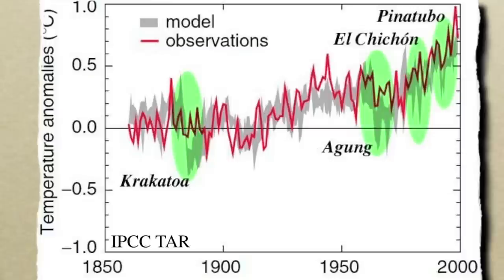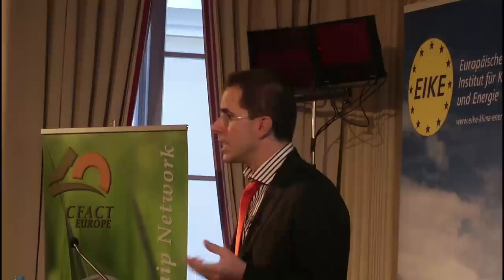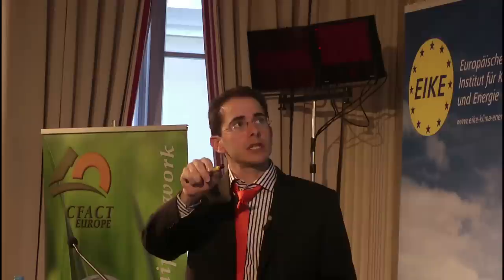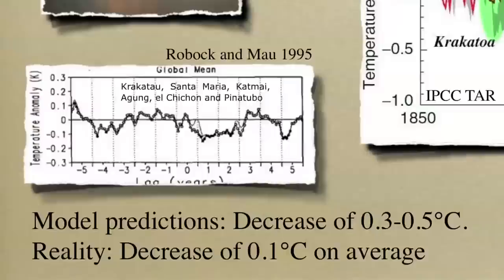In reality, whenever we had large volcanic eruptions — this is the temperature before and after the six strongest volcanic eruptions since Krakatau — you see that the average temperature decrease has been only about 0.1 degree. Why? Because the global circulation models are too sensitive. They're more sensitive than reality.